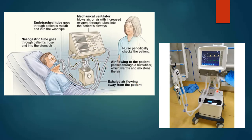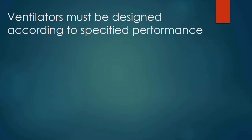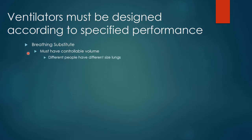Here's an actual functioning ventilator. When we think about ventilators, they have to be designed according to a specified performance. A ventilator is a breathing substitute, so it must have a controllable volume of air that we're pushing into a person's lungs. Big people will have larger lungs than smaller people, so we have to be able to tune the ventilator — it has a controllable volume of air. Different people have different sized lungs, so we also have to have a controllable pressure. You've got to make sure you don't over-pressurize them; you have to have enough pressure to inflate them, but not so much that you damage them.